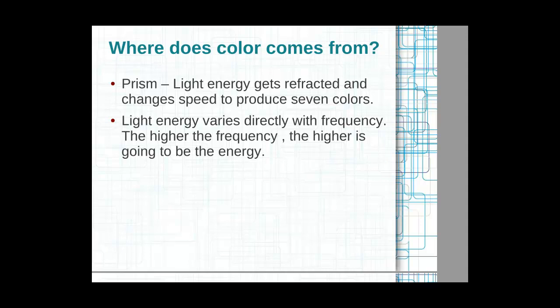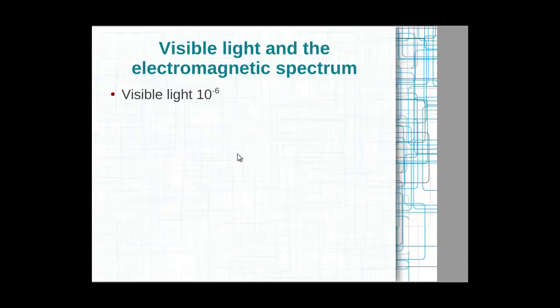Light energy varies directly with frequency — the higher the frequency, the greater the energy level. In the electromagnetic spectrum you have all the waves: microwave, radio wave, and so on. Among these we have visible light, which has a wavelength of approximately 10 to the power of minus 6.